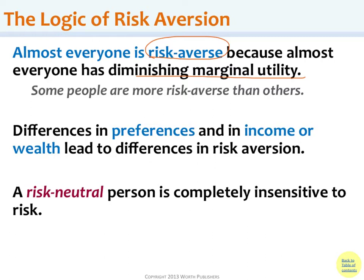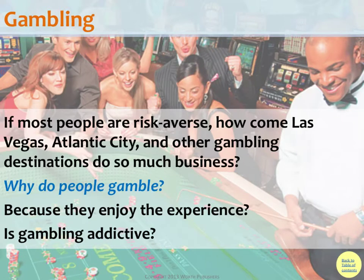Beyond that, we have differences in risk preference. Some people enjoy driving fast and are willing to accept a higher risk of accidents. Some people have higher wealth and income, which allows them to absorb more monetary cost. A risk-neutral person is completely insensitive to risk, but those people don't really exist much in nature. There are also behavioral economics aspects — for instance, how do you explain the popularity of gambling if people are risk-averse? There may be experiential benefits, or perhaps it's addictive and rationality is compromised.